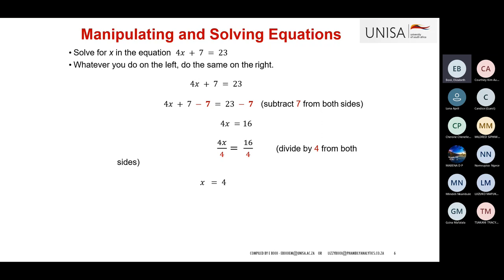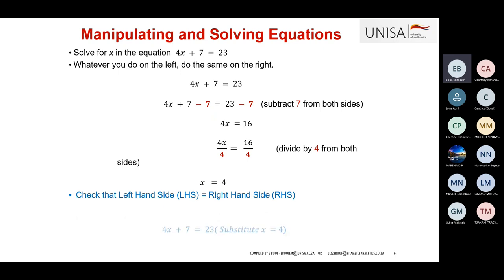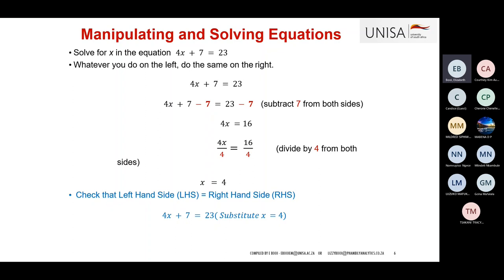You can validate this because it's an equality: whatever is on the left should equal the right. I can substitute x = 4 back into 4x + 7, giving 4 times 4 plus 7 equals 23 — the equation balances. That's an extra step you can use to check, but it's not necessary.